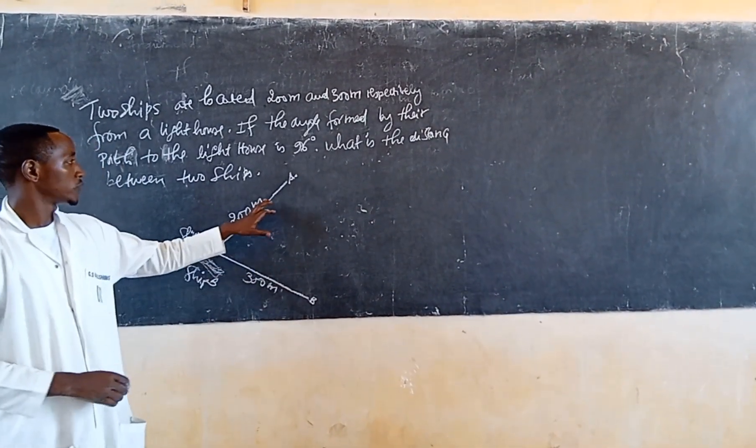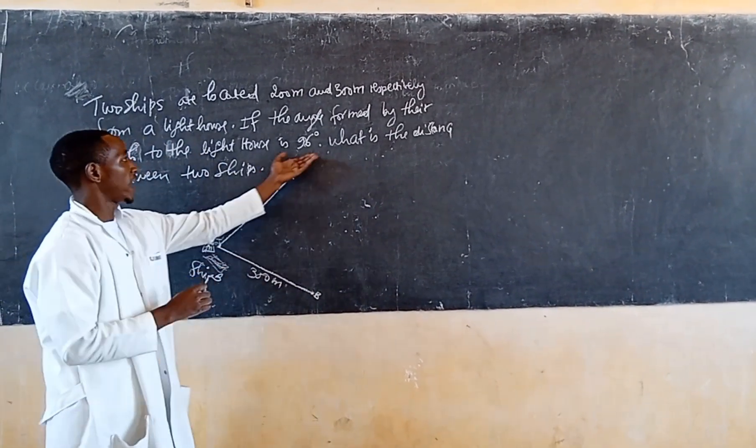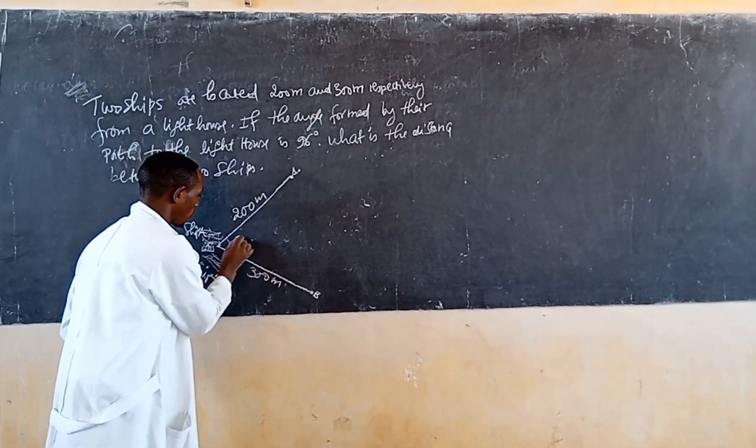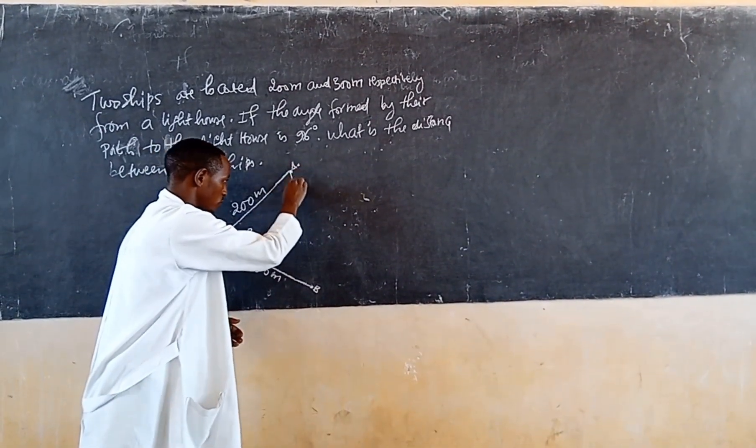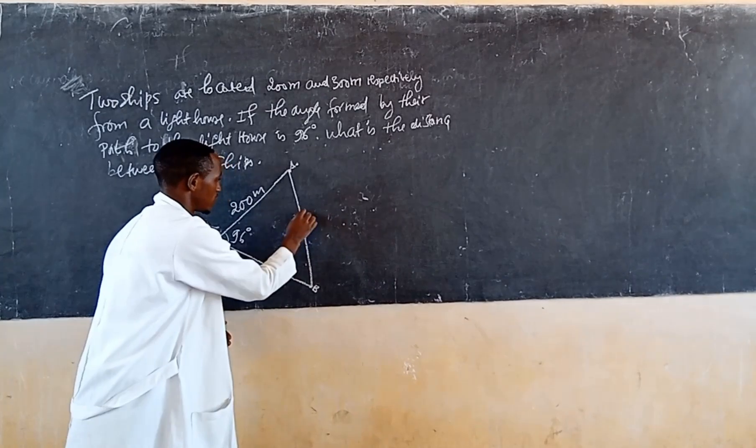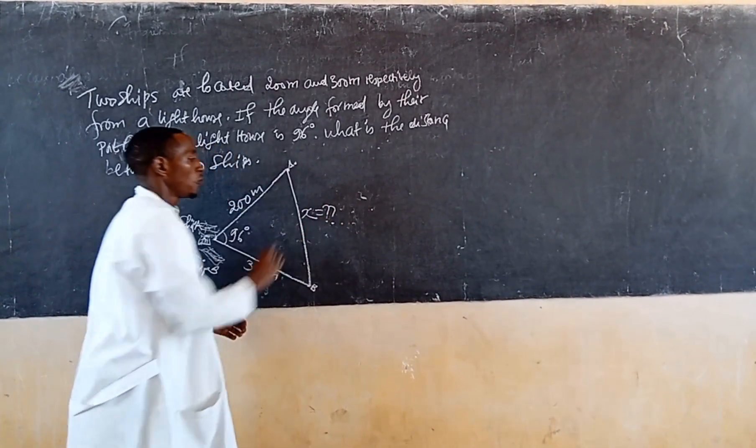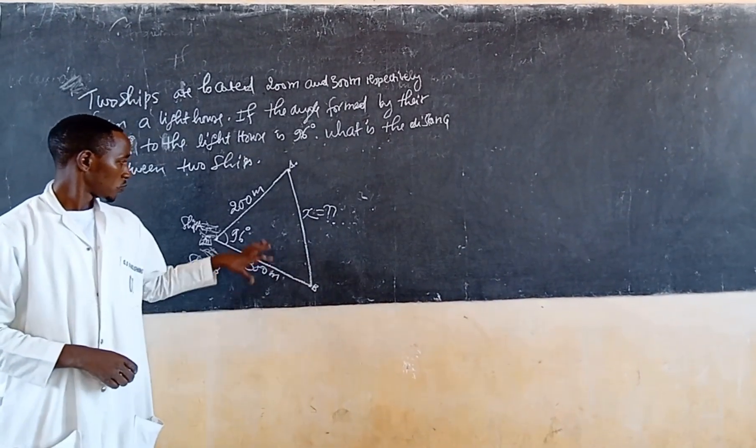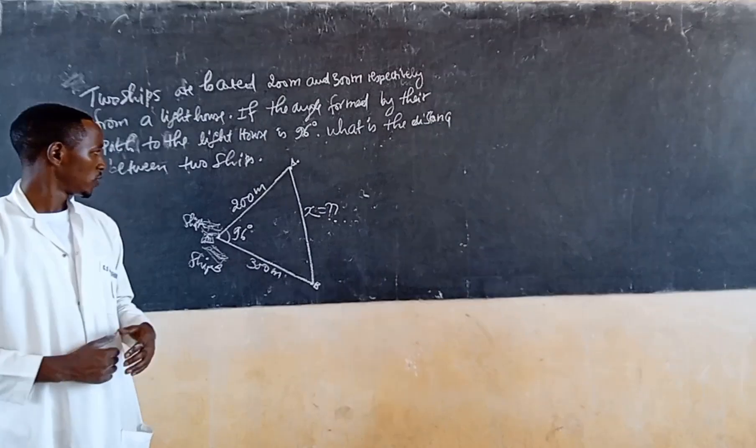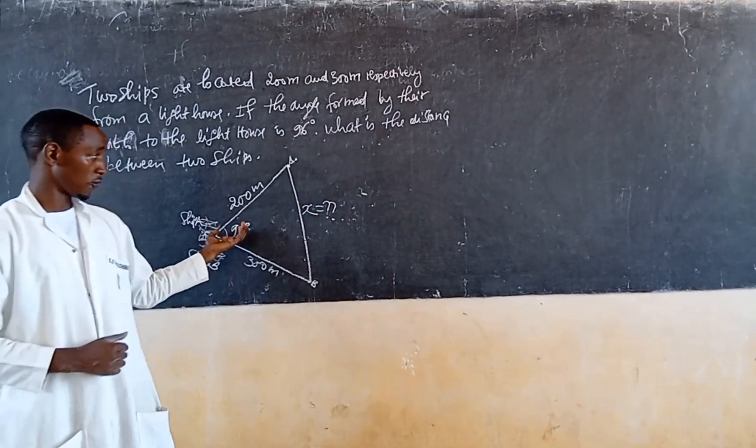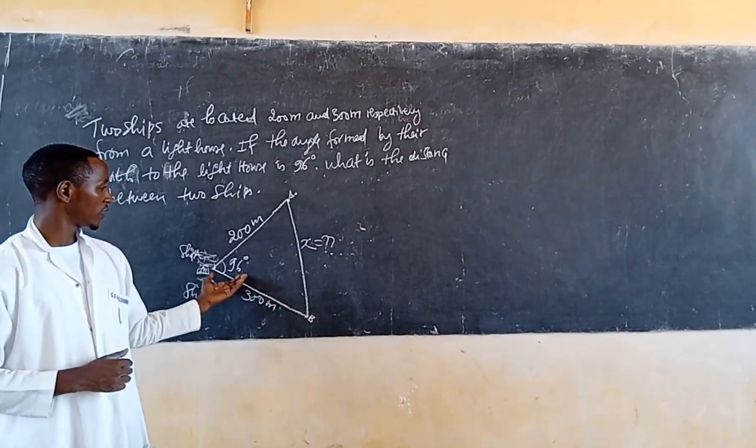So we need what? We need the distance between A and B. While the angle between is equal to 86 degrees, this is the distance. So to find this side, I need the opposite side of that angle. So we can use the cosine principle or cosine rule to find that.